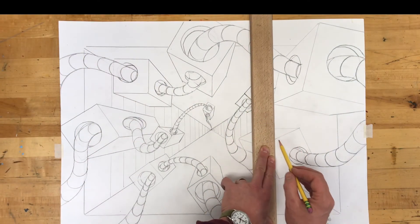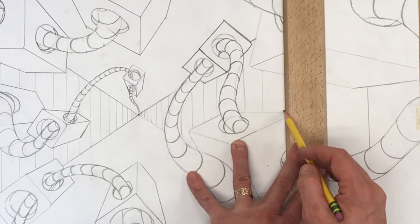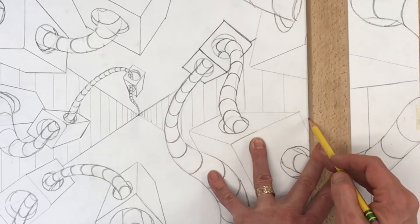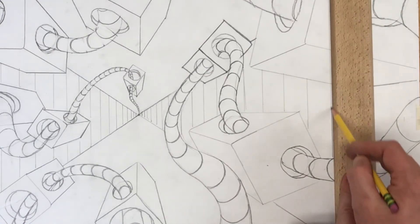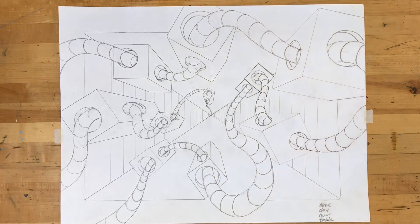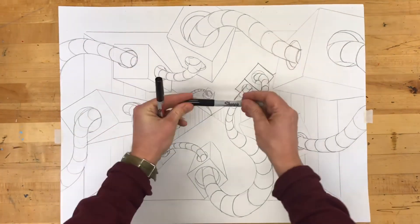We'll simply do the same thing on the other side of our vanishing point. Finally, Sharpie Marker.